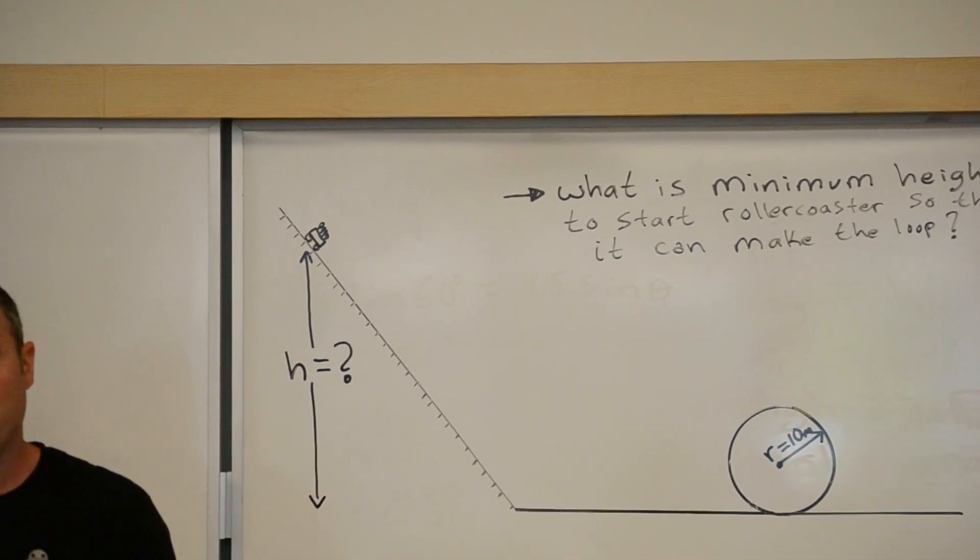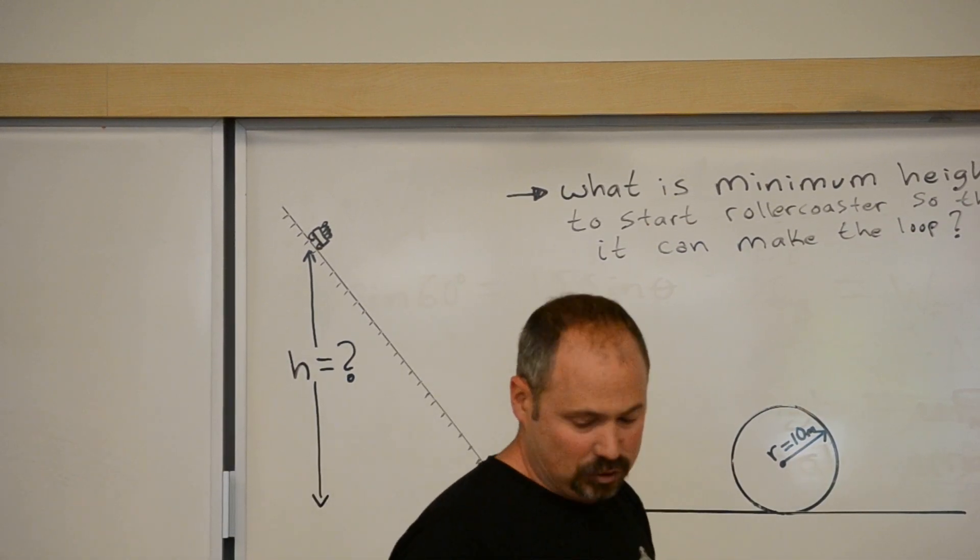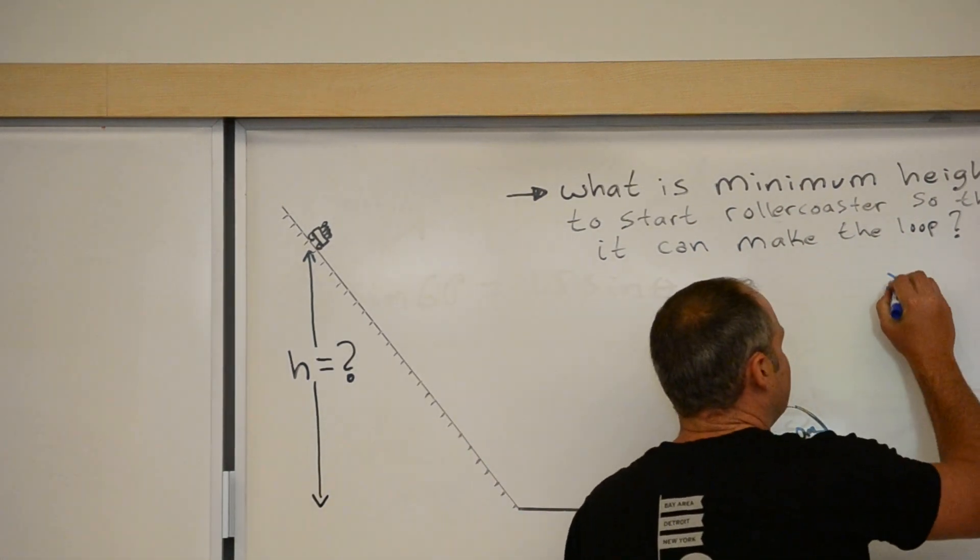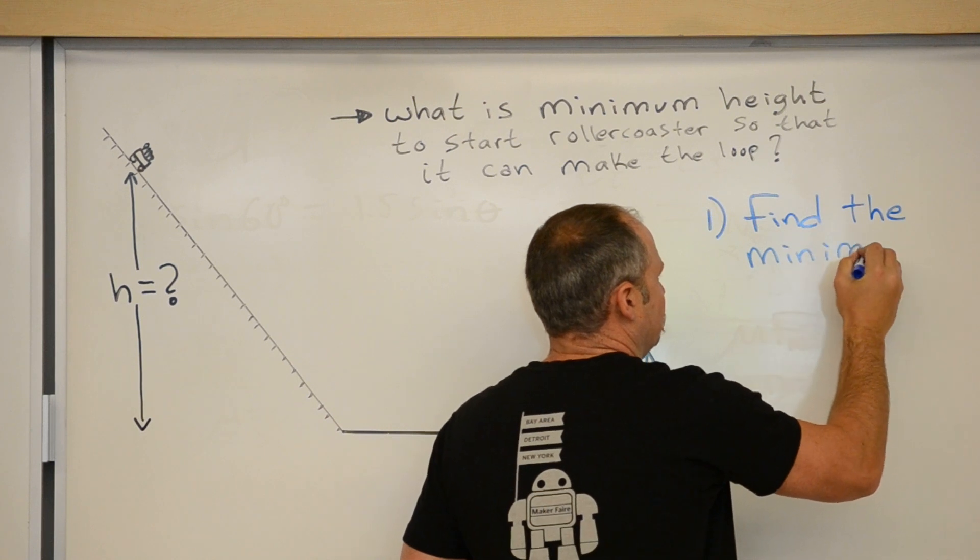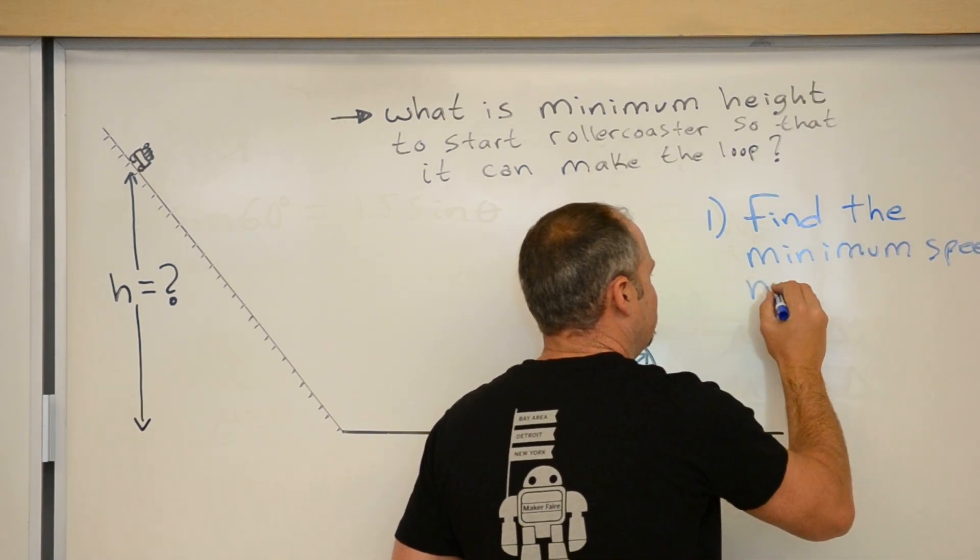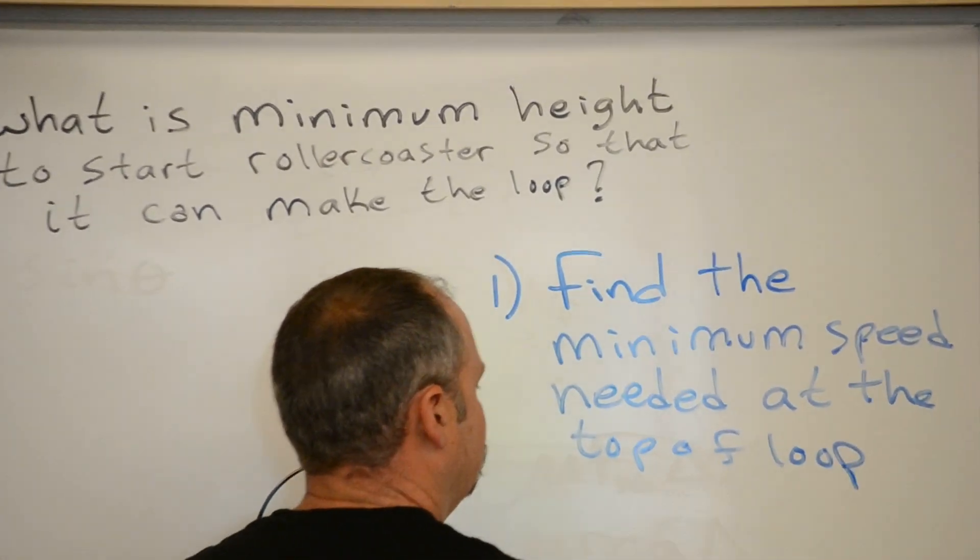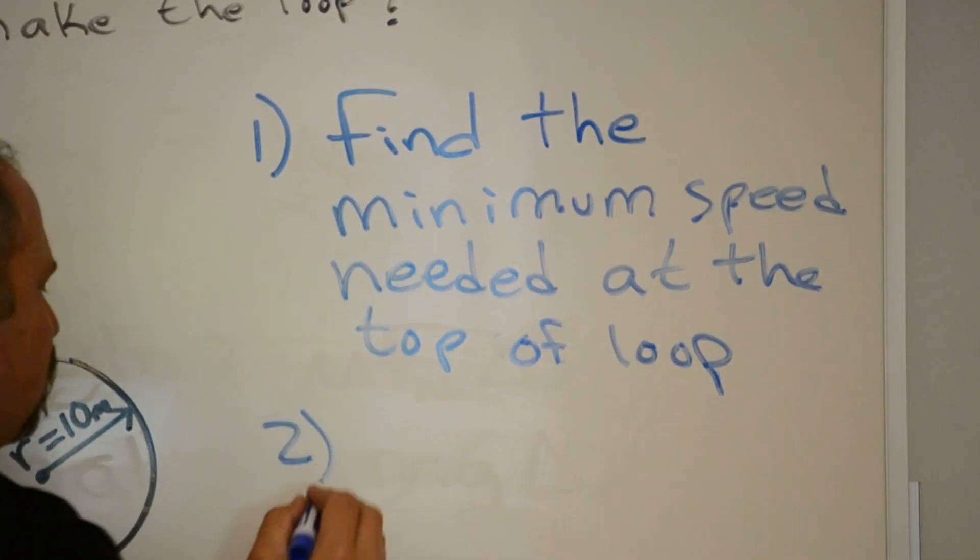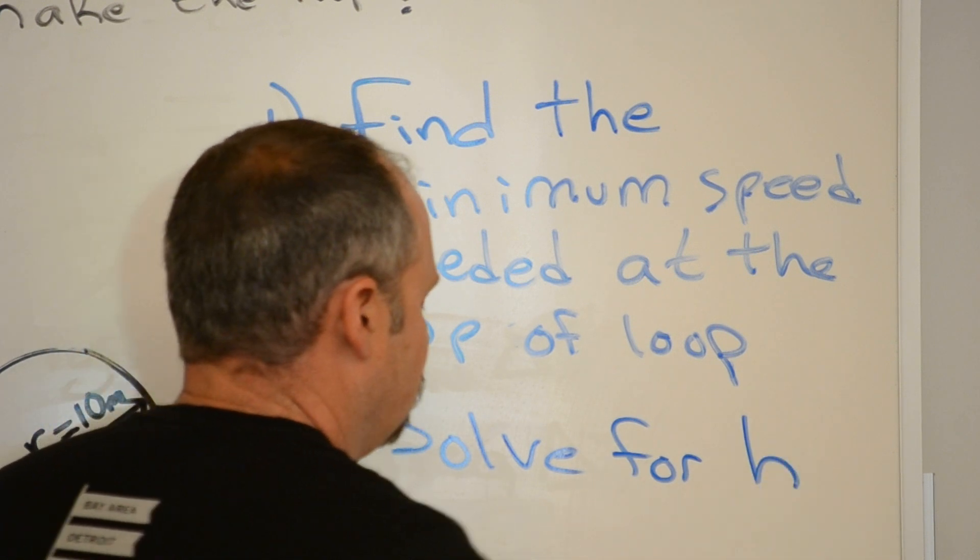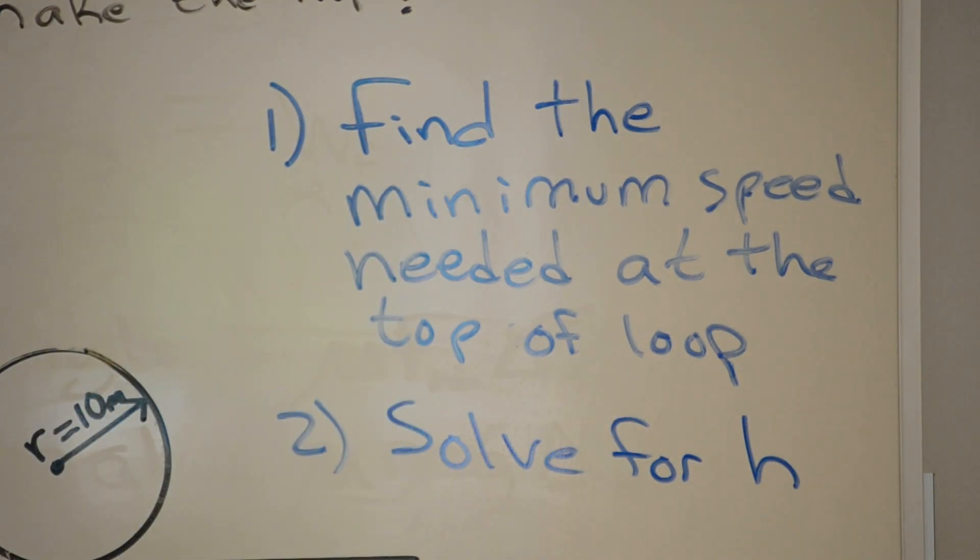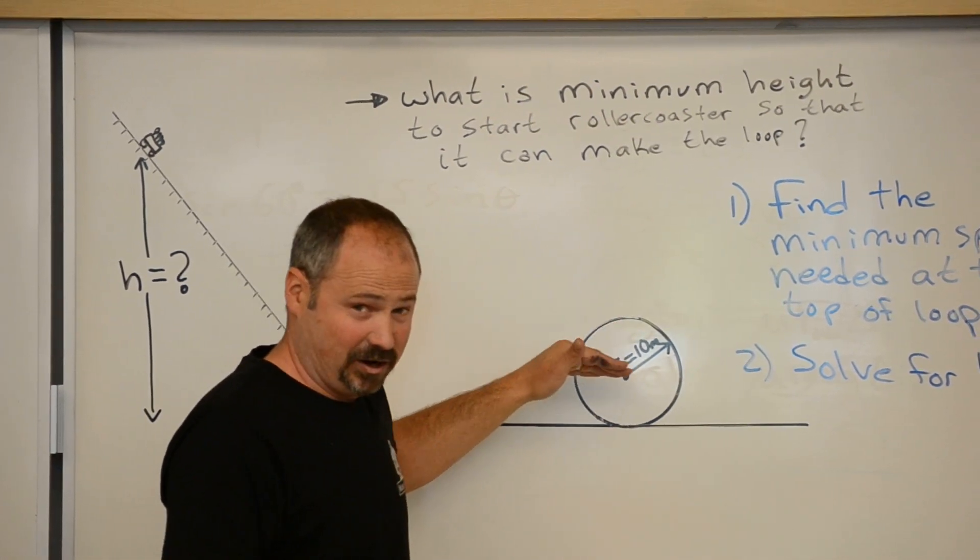Now we'll use energy conservation to figure out what that height must be in order for the roller coaster to make the loop. We're going to break this up into two steps. Step one, find the minimum speed needed at the top of the loop. Step two, we'll then solve for h, where h is the minimum height the roller coaster needs to start at in order to have the speed solved for in step one, which is then the speed necessary to safely make the loop.